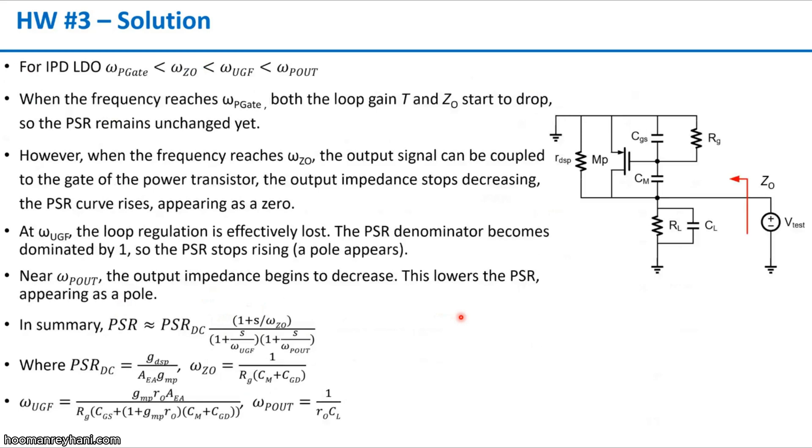Now the question is, what is the ZO and what is the bandwidth? In this internal pole dominant IPD LDO case, we care about several frequencies, like the gate pole frequency at the gate of the power transistor. The ZO here is the frequency response of the power stage output impedance. When we calculate output impedance of the power stage, the MP has a Miller compensation capacitor CM between the drain and gate. It also has a CGD, which can merge into this CM. At medium frequency, the output signal will be coupled to the gate, and then we will see 1 over gm from this power transistor. And then we will see a zero, equivalent zero, that contributes to the PSR response.